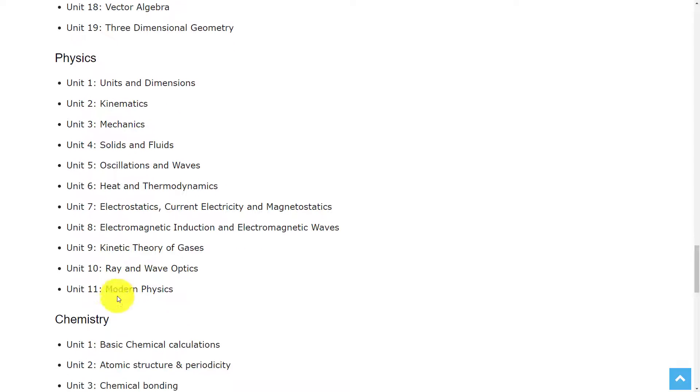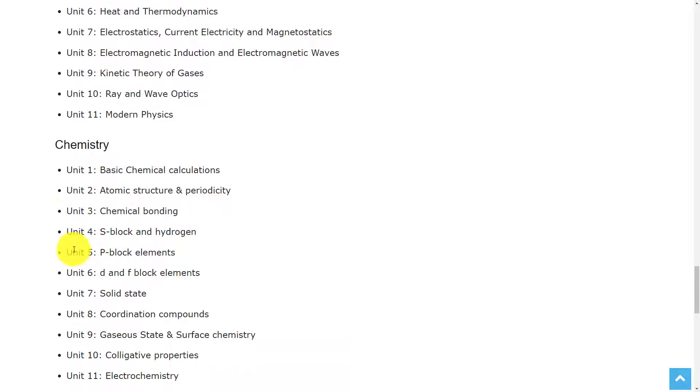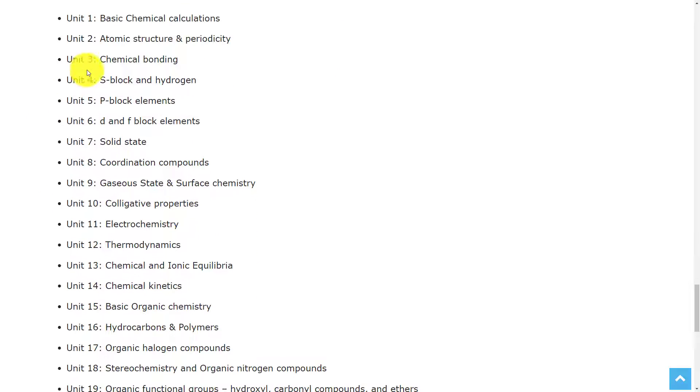The third section is Chemistry, in which the topics are: Basic Chemical Calculations, Atomic Structure and Periodicity, Chemical Bonding, S Block and Hydrogen, P Block Elements, D and F Block Elements, Solid State, Coordination Compounds, Gaseous State and Surface Chemistry, Electrochemistry, Thermodynamics, Chemical and Ionic Equilibria, Chemical Kinetics, Basic Organic Chemistry, Hydrocarbons and Polymers,